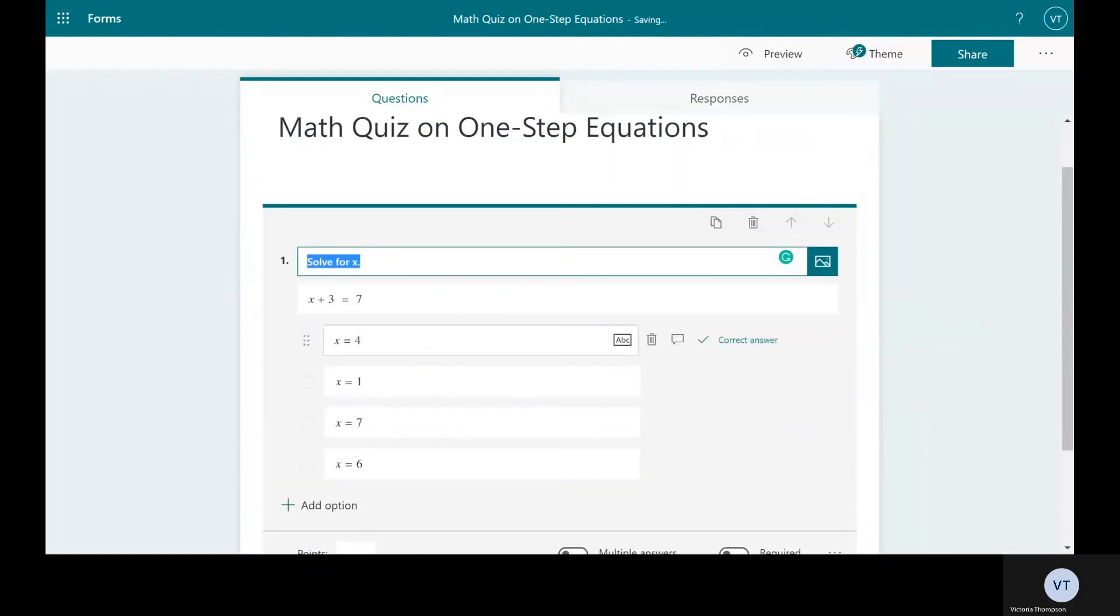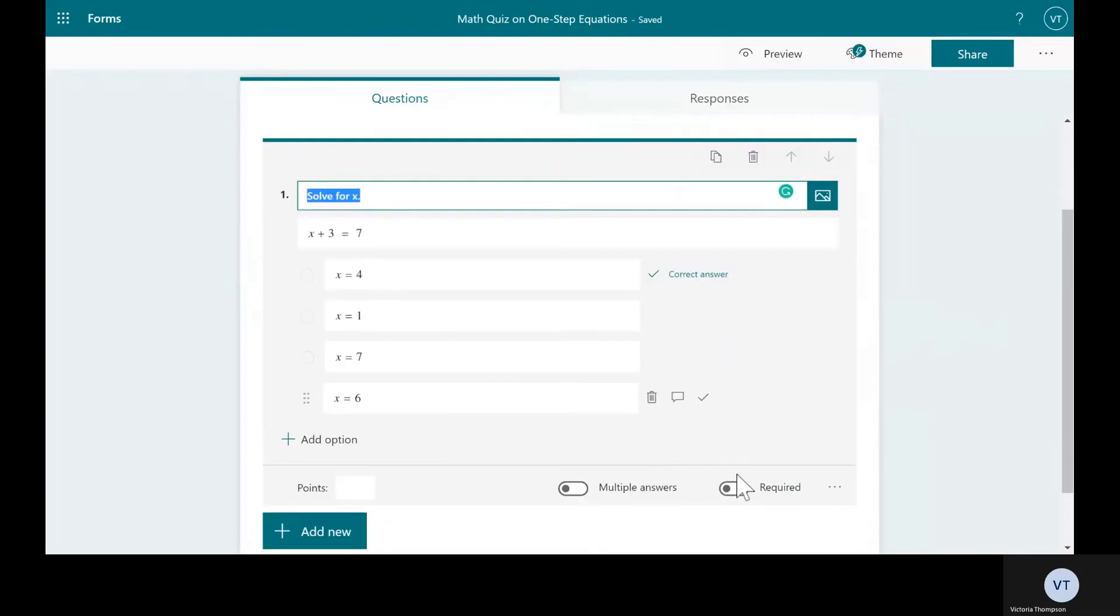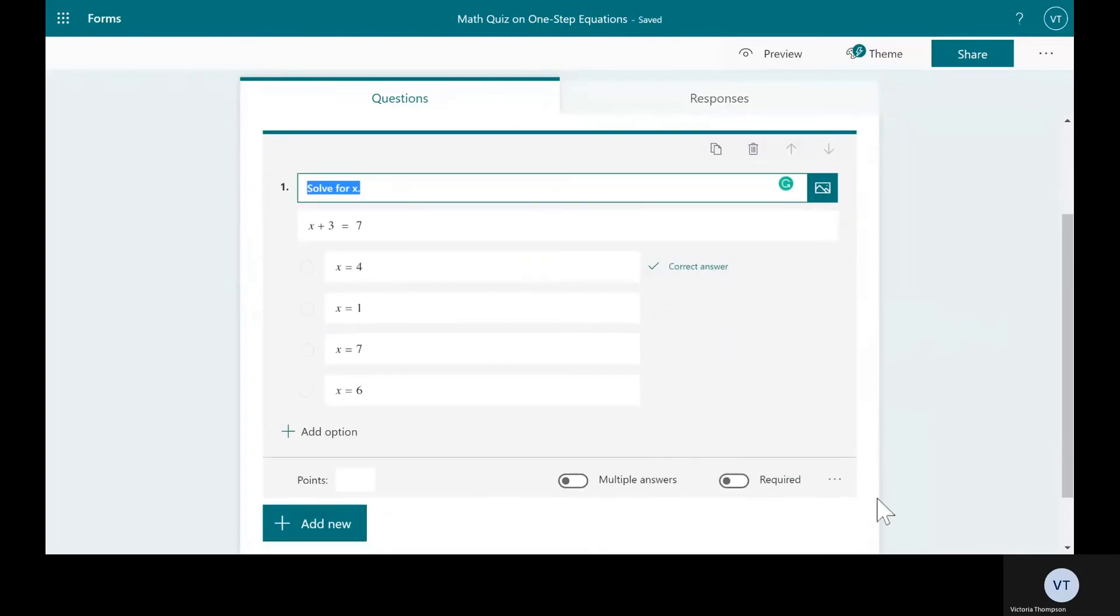So you'll notice that there are some suggested results there. x equals 4 has a checkmark next to it, and this means that this is the correct answer. And I cannot express how wonderful this is for math, having suggested answers already for your students and also for correct answers being selected.